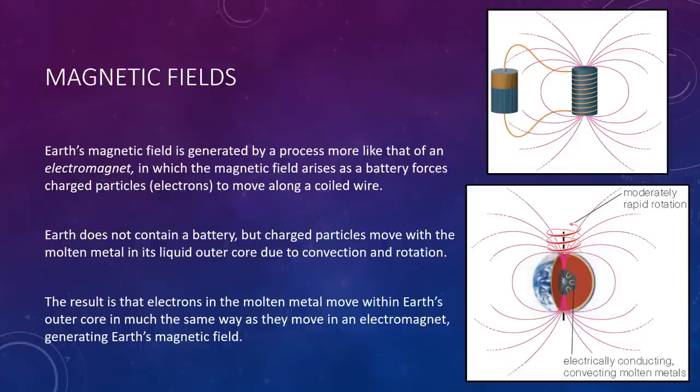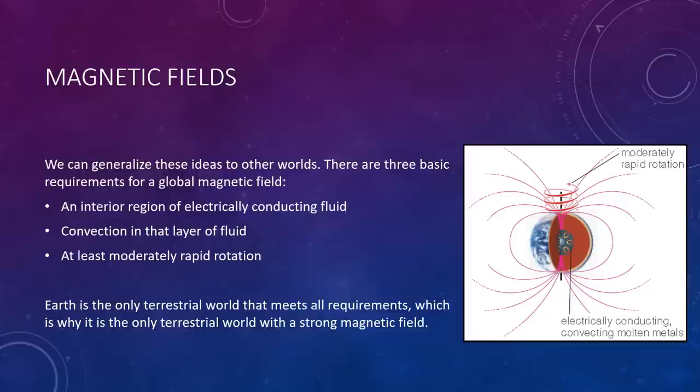Earth does not contain a battery. We've kind of been able to tell so far. But charged particles move with the molten material in its liquid outer core. We do have a liquid outer core, which means there is the motion of charged particles. Internal heat causes the liquid metal to rise and fall via convection, while Earth's rotation twists and distorts this convection pattern. The result is that electrons in the molten metal move within Earth's outer core in much the same way that they move in an electromagnet, generating Earth's magnetic field. Although in the top we needed a battery, the reason that a magnetic field is created was the motion of charged particles. Well, we have a liquid core with charged particles moving around. So, in much the same way, we generate a giant magnetic field around the Earth.